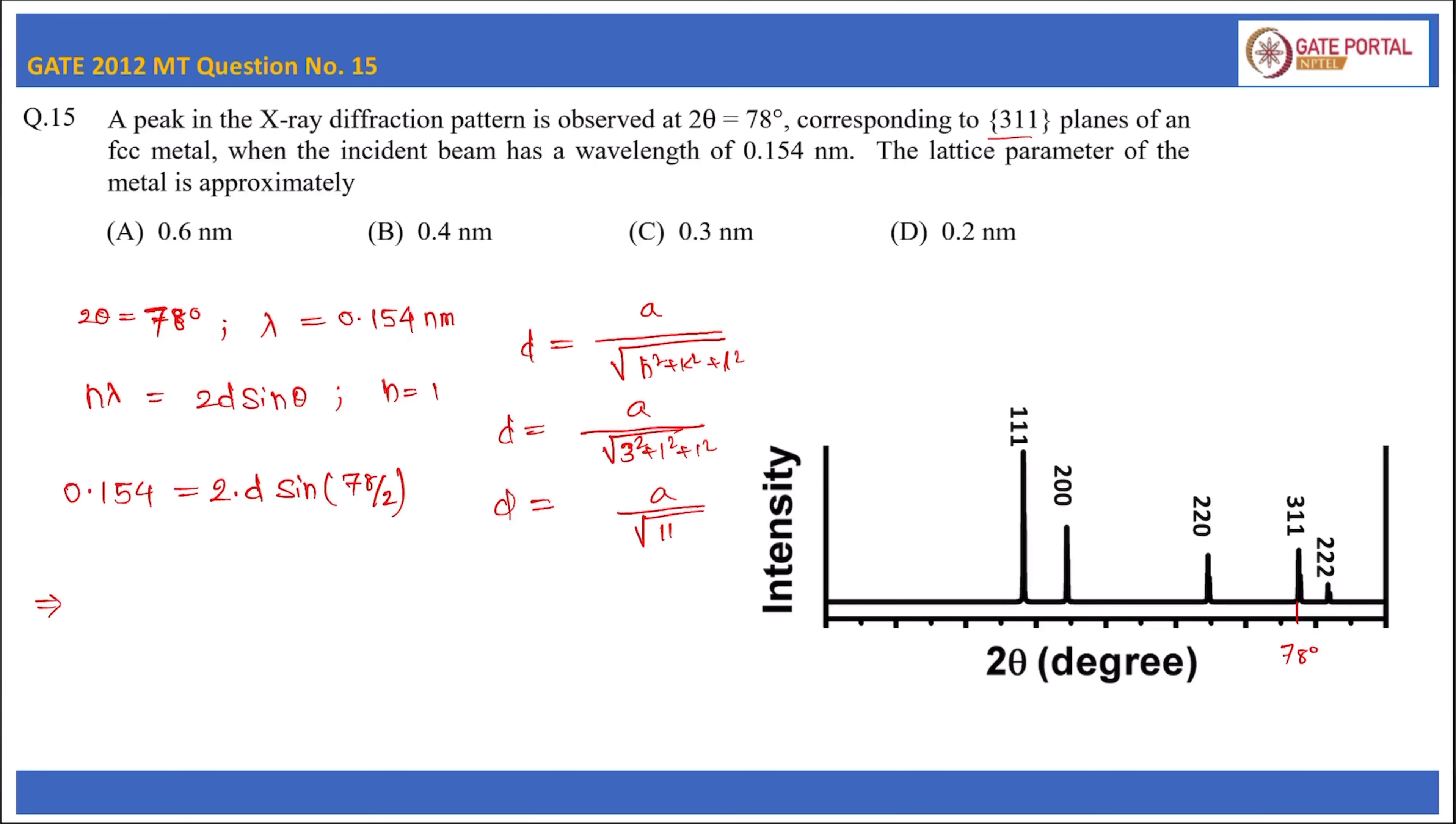If we put this relation in the equation, we get 0.154 = (a / √11) × 2 × sin(39°). We can write a = (0.154 × √11) / (2 × sin(39°)). If we calculate this, we get a = 0.4 nanometer.